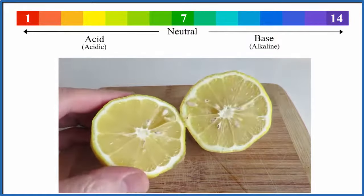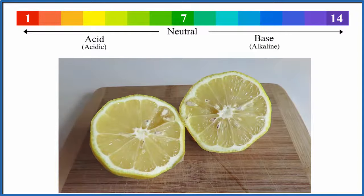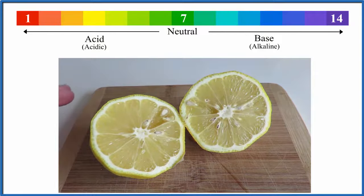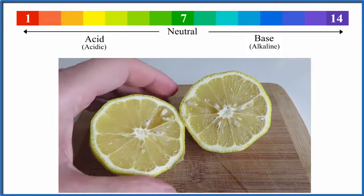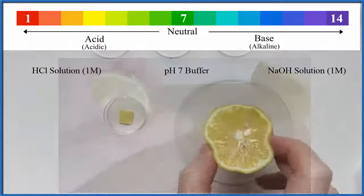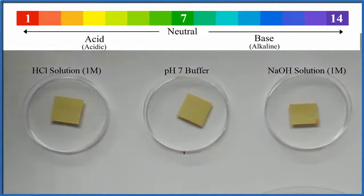In this video we'll determine the pH of lemon. We want to know the pH value of lemon juice. So we have a fresh lemon here and we cut it in half and we're going to take the juice and figure out what the pH is. So we have our scale here from 1 to 14.